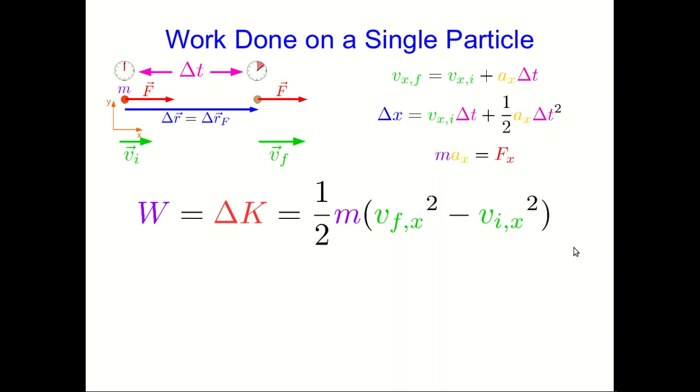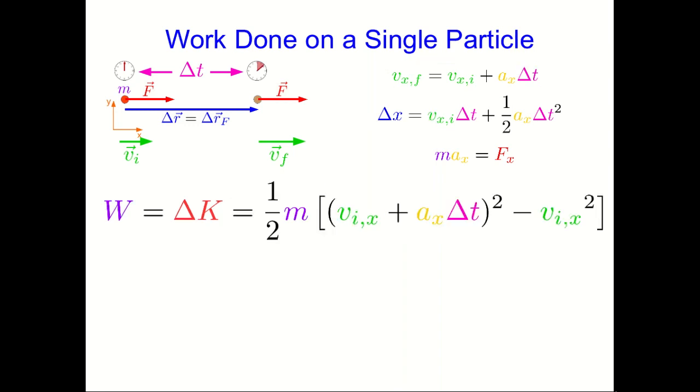Let's manipulate them into a useful form. So I can expand the change in kinetic energy out into this form in terms of the final and initial x-components of velocities. And now I can use the expression we have for the final x-component of velocity and replace it in the equation and get this. Now, notice that I have a vix that's going to get squared and a minus vix squared here. And so there's going to be some cancellation. And so expanding out the square and carrying out the cancellation, we have this.